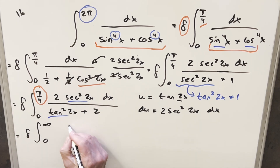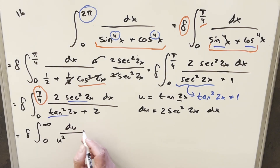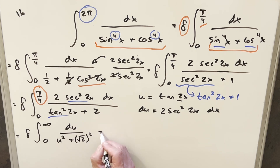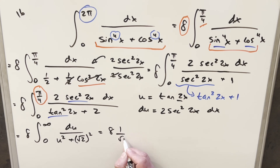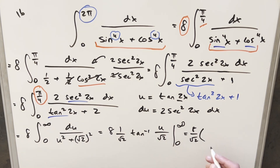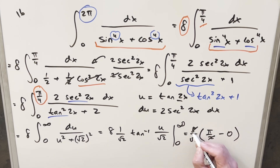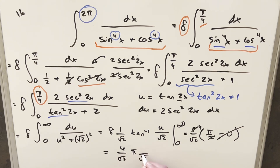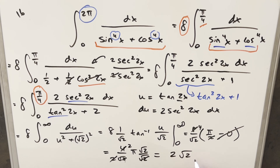Continuing: the integral becomes 8 times the integral from 0 to ∞ of du / (u² + (√2)²). This is a standard arctan form: (1/√2) arctan(u/√2) evaluated from 0 to ∞. arctan(∞) = π/2 and arctan(0) = 0. So we get 8/(√2) · π/2. Simplifying: cancel the 2 with 8 to get 4, then rationalize by multiplying by √2/2 — giving a final answer of 2√2 · π.